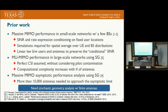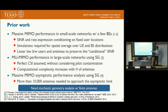Stochastic geometry has also been applied to analyze the asymptotic performance of massive MIMO when we have an infinite number of antennas. But in our simulation, we show that it requires more than 10,000 antennas for the SINR distribution to approach the asymptotic limit. So it is very important to analyze the performance of massive MIMO in stochastic geometry assuming a finite number of antennas.